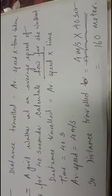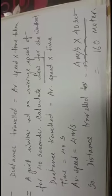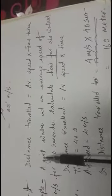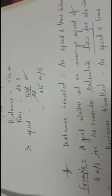Now I will show you another word problem where the question is asking about the distance. In this example, a girl walks at an average speed of 4 meters per second for 40 seconds — calculate how far she walked. In this question, 4 meters per second is the speed.